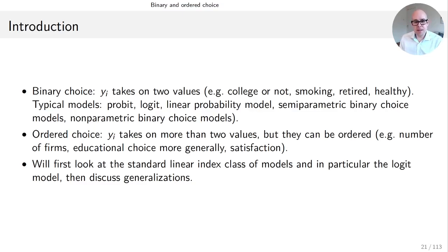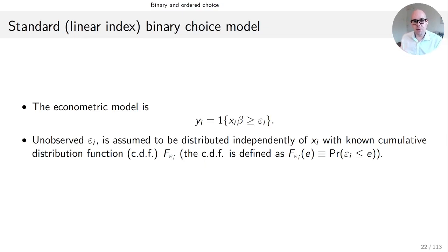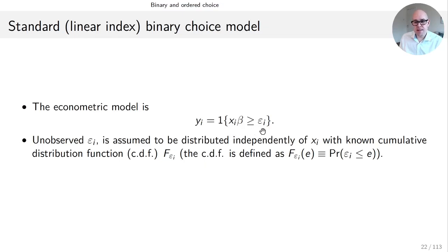What we do here is look at a baseline version of the model, which is part of the family of standard linear index binary choice models — in a later video we're going to discuss generalizations. The baseline version has a binary choice y_i coded as zero and one. It equals one via an indicator function that takes on the value one if the condition in curly brackets is true and zero otherwise — specifically if x_i beta is at least as big as epsilon_i.